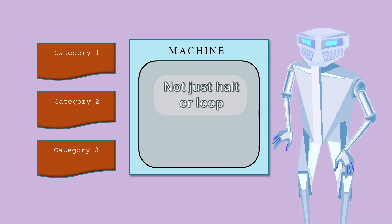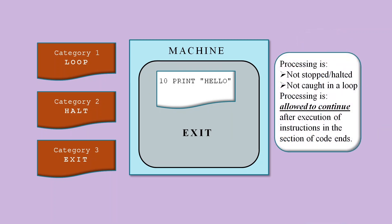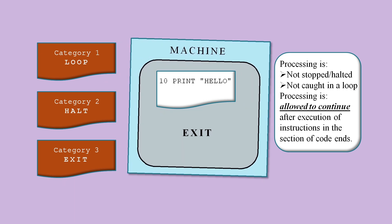Tara proposes that when we execute a section of code on a machine, the final processing state is not just halt or loop, but can be one of three categories. The first category is an inescapable loop, the loop category. The second category is where we have a machine level halt, such as a shutdown instruction, the halt category. And the third category is where the processing exits the section of code without doing a halt or a loop, the exit category. A key point about this exit category is that the processing is allowed to continue after the end of the section of code. It's down to the design of the machine itself what it will do after the last program instruction has completed. It might decide to halt, or it might decide to start again from the first instruction, in which case the machine itself could cause an otherwise exiting program to go into a loop.